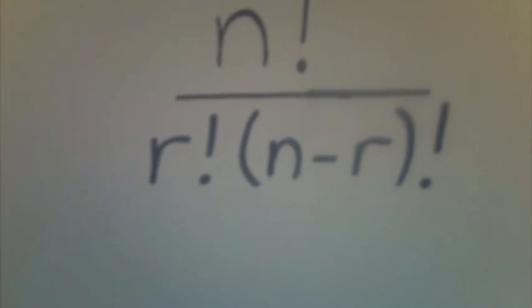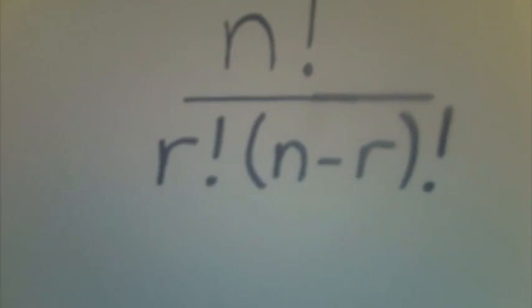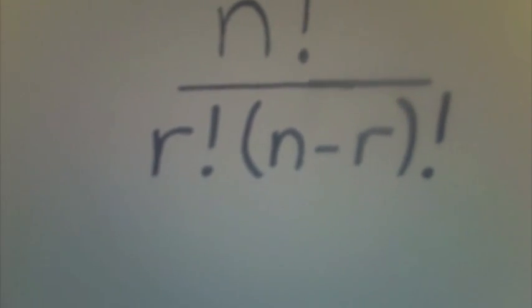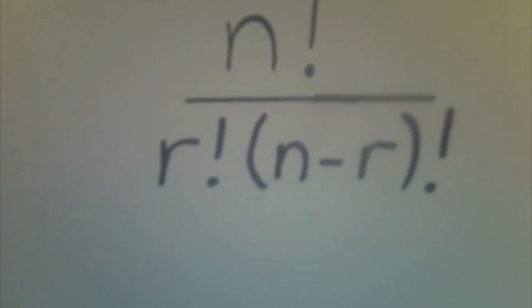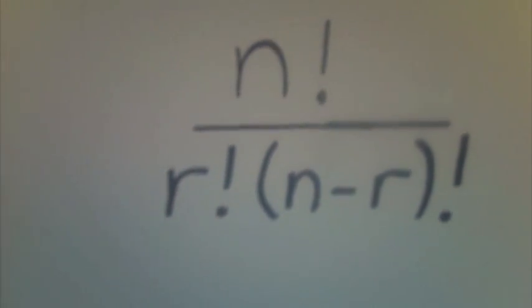It's n factorial over r factorial times n minus r factorial. If n's the row and r is the placement in that row, then you don't need to know any more. If there was a Pascal's triangle for hockey, we could figure out when the Leafs would score. Wait, no — they don't need a triangle for that. Never happens!